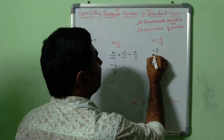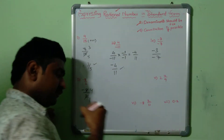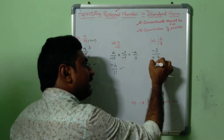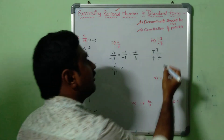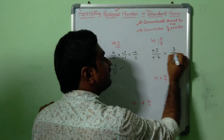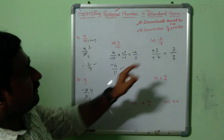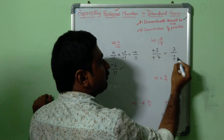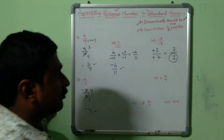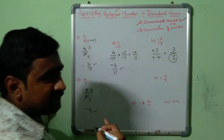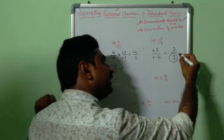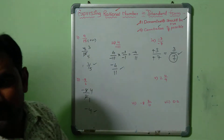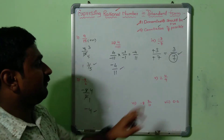Fourth example: (−3)/(−7). Here minus and minus can be directly converted to positive, giving 3/7. First step — denominator 7 is positive, no issue. Second step, cancellation — 3 and 7 have no common factor, so leave it. Therefore, 3/7 is the standard form of (−3)/(−7).